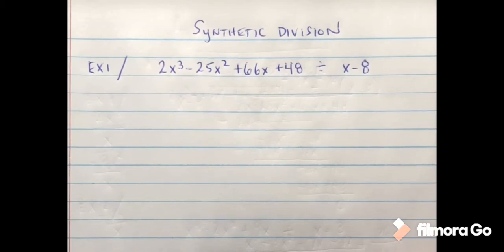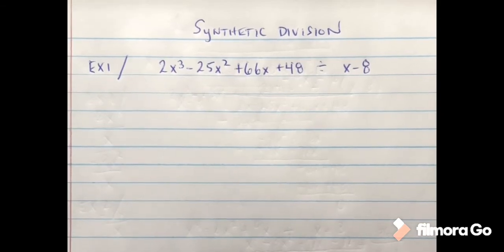It allows us to find factors of a longer polynomial so that we can condense it and maybe get it to where we could factor it to find the zeros of the polynomial.